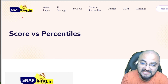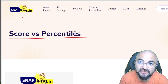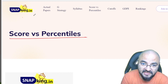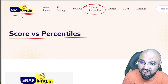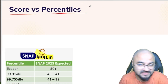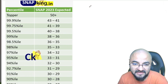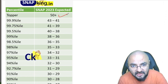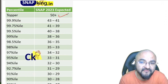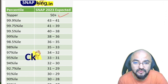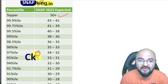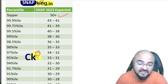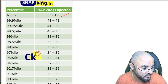Hello guys, let's look at the score versus percentile for the SNAP exam Slot 2. You can find detailed score versus percentile information on our site snapking.in. The topper of course will be around 50 plus. The overall cutoff can vary by plus or minus 2 marks. The cutoff can go down from there — this is based on my analysis after looking at the SNAP Slot 2 paper.